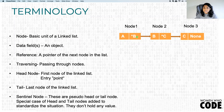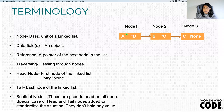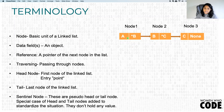Traversing is moving from one node to another node. Let's say we are at the head node — from the head node we move to the next node, and then moving to the next node. It's just passing over through nodes. The head node is the first node in the linked list; it's usually called the entry point. You reach the other nodes through the head node.